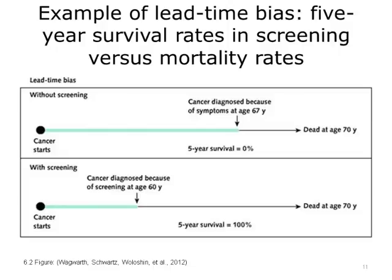Lead time bias occurs when screening finds a cancer earlier than it would have been diagnosed because of symptoms, but the earlier diagnosis does nothing to change the course of the disease. For example, a man experiencing a persistent cough and weight loss is diagnosed with lung cancer at age 67 and dies at age 70 — five-year survival for such patients is 0%. If screened earlier and his cancer detected at age 60, but he still dies at 70, his life has not been extended, but the measure of five-year survival becomes 100%. People could be misinformed without careful attention to time span and outcome when communicating the harms and benefits of screening and other treatment options.